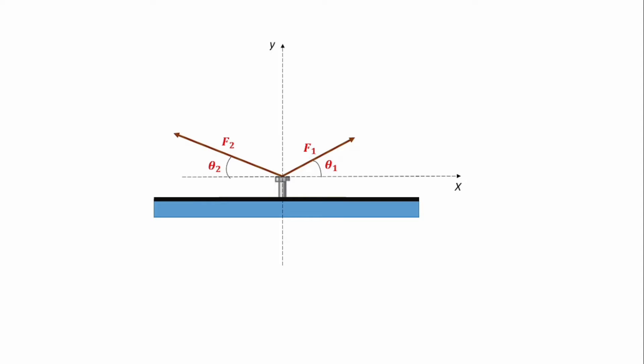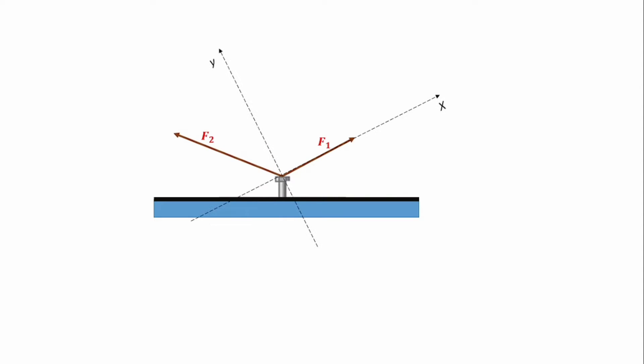It's important to note that the coordinate system can take any form. It's not compulsory that you must have a perfectly horizontal and perfectly vertical axis. It could be arranged so that the x-axis is parallel to the direction of force F1, and force F2 is then inclined at an angle to either the vertical or horizontal axis.